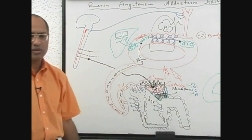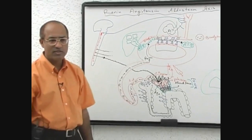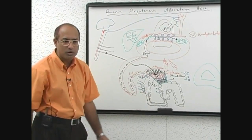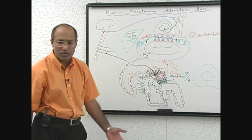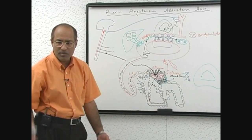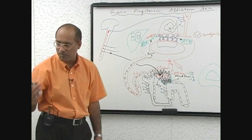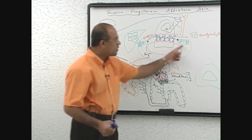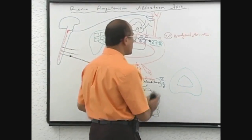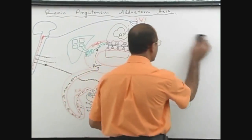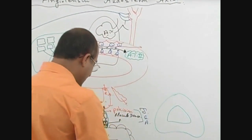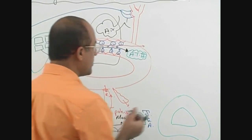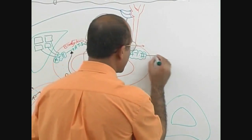Now we have angiotensin 2 in our circulation. We need to see what angiotensin 2 will do in the body — it should bring blood pressure up and blood volume up, since that was the problem. So let's look at the classical actions of angiotensin 2.